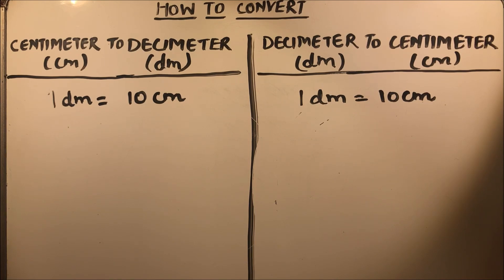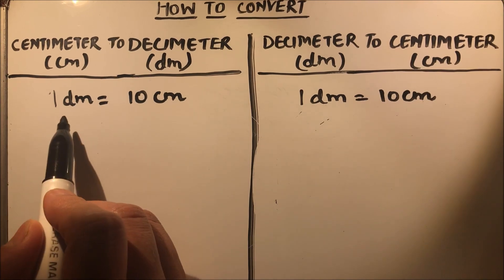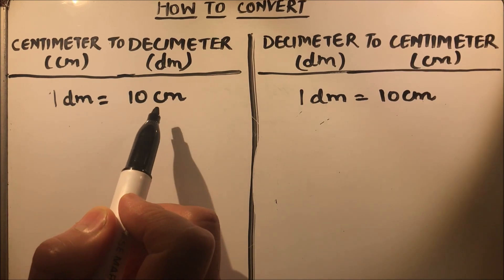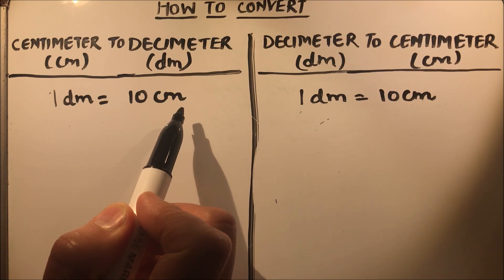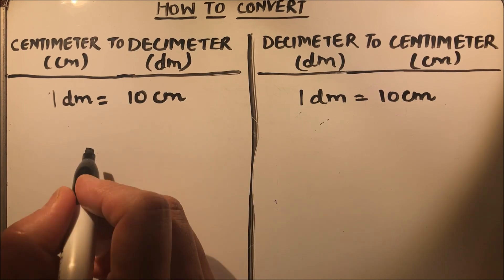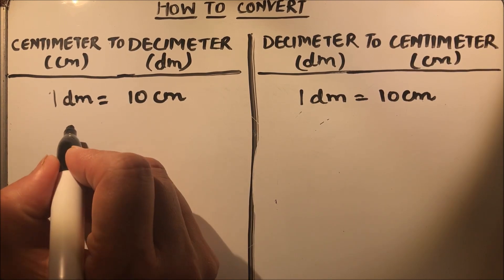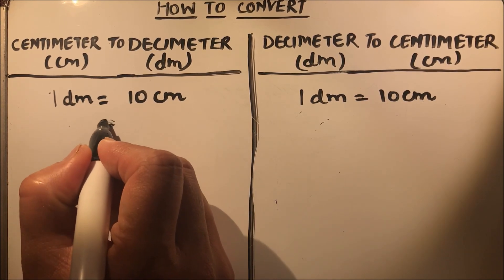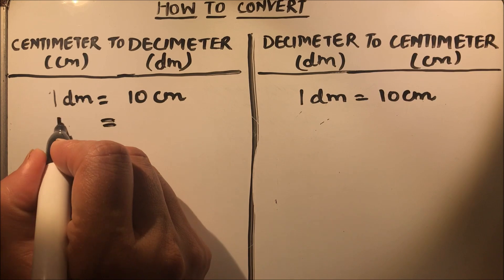For this we should know the basic relation between centimeter and decimeter, which is: one decimeter is equal to 10 centimeters. From this relation we can write it as: